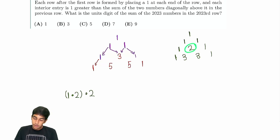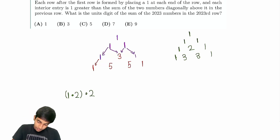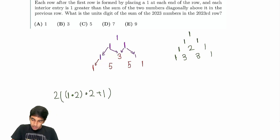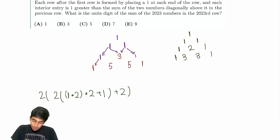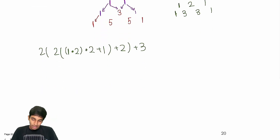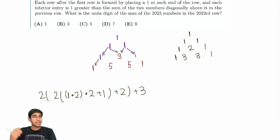It only applies to the interior entries. So: 1 times 2 times 2, but we have to add an additional 1. Next time we double it again, but now each of these two interior entries is each one more, so we add an additional 2. We keep doing this — multiply by 2, and next time there are three interior entries, so we add 3. You can see the pattern — but if you tried to evaluate this term by term, you'd be done by maybe next year's AMCs.